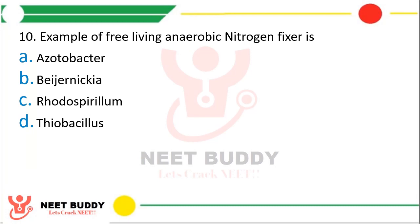Question 10: Example of free living anaerobic nitrogen fixer is? Azotobacter, Beijerinckia, Rhodospiralum, or thiobacillus. The correct answer is Option C — Rhodospiralum is the example of a free living anaerobic nitrogen fixer.